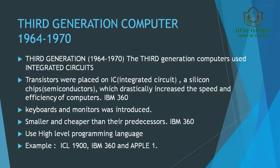Examples of third generation computers include ICL 1900, IBM 360, and Apple One. They were smaller, faster, and much more economical. They worked better and more efficiently than earlier computers. An important point is that they were also introduced to the public for home use, making them people-friendly.